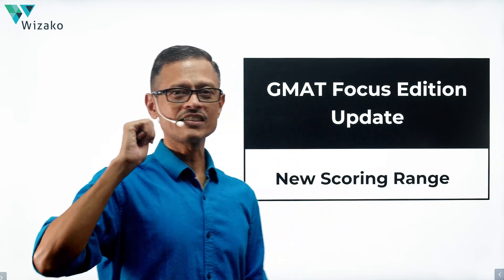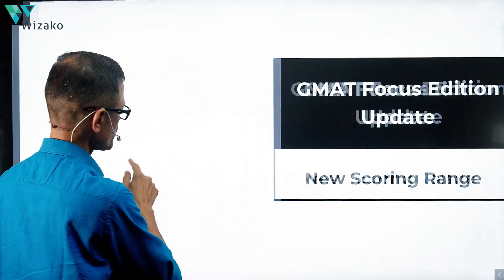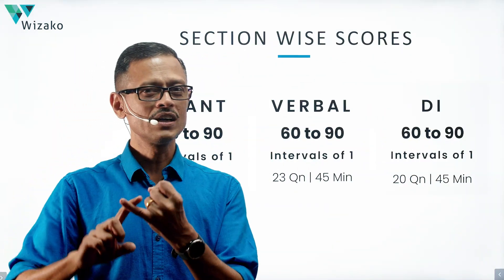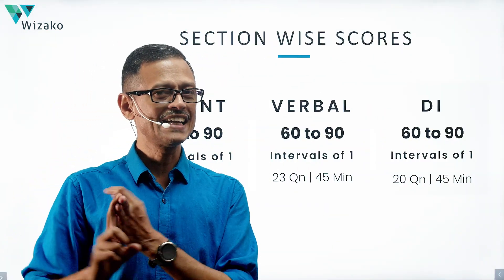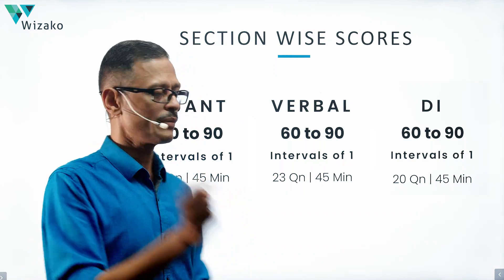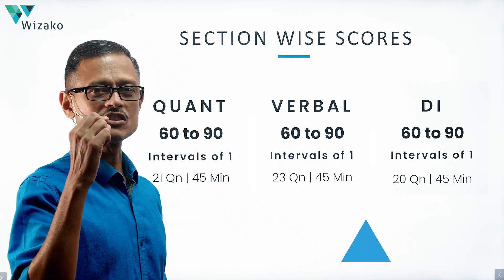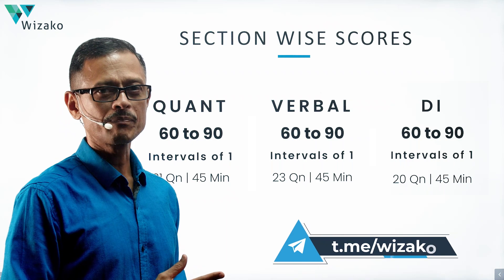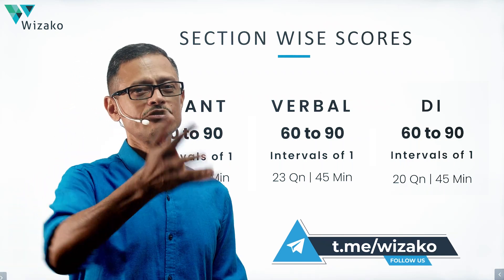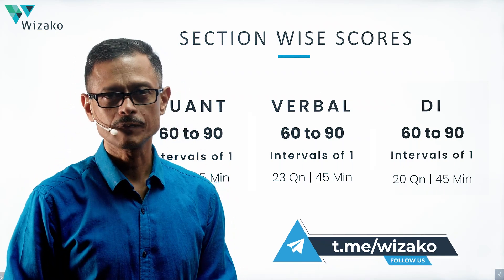Let's take a look at the section-wide scores. For all three sections — Quant, Verbal, and Data Insights — the scoring range is going to be 60 to 90 points, and it moves in intervals of one point. So a test-taker's score could be 84, 85, 86, and so on.